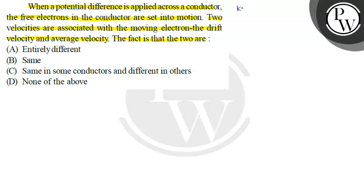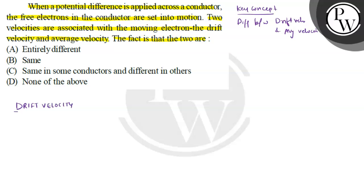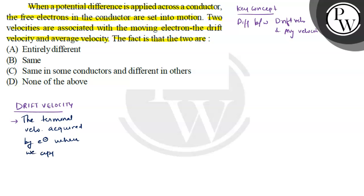The key concept of this question is the difference between drift velocity and average velocity. Drift velocity is the terminal velocity acquired by electrons when we apply a potential difference across a conductor. And the average velocity is the same.